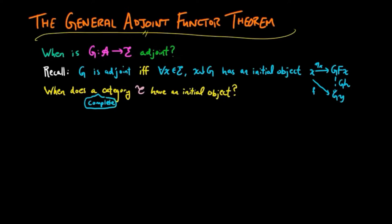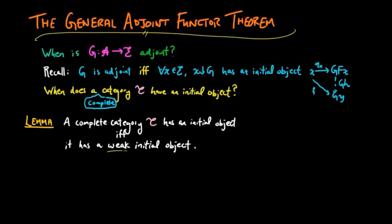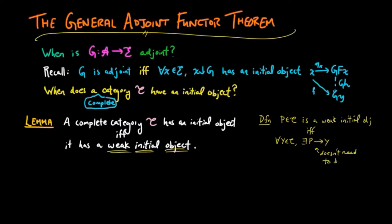The main lemma we use in this section is the following: a complete category C has an initial object if and only if it has a weak initial object. A weak initial object is the same as an initial object except that we don't require uniqueness. The definition is that P in C is a weak initial object if and only if for each object Y in C there exists a morphism P to Y, and that morphism does not need to be unique.